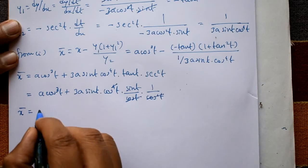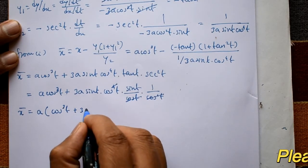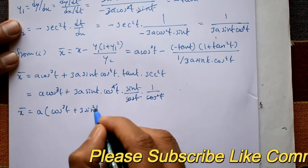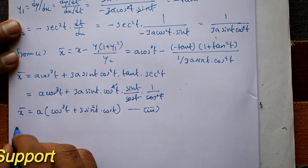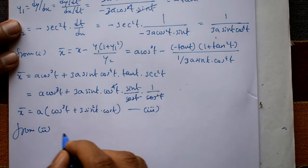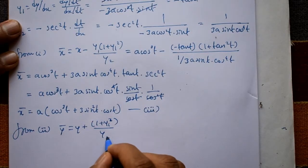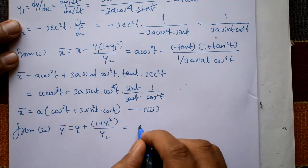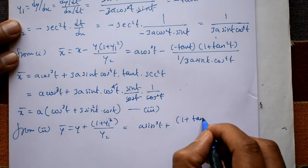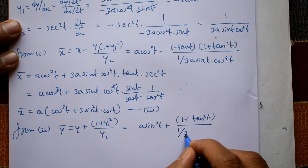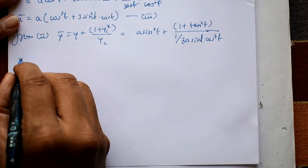Therefore x̄ = a·(cos³(t) + 3·sin²(t)·cos(t)). This is equation 3. Now from equation 2, ȳ = y + (1 + y1²)/y2. Substituting y = a·sin³(t) and y1 = -tan(t), so 1 + tan²(t) = sec²(t), divided by y2 = 1/(3a·sin(t)·cos⁴(t)).